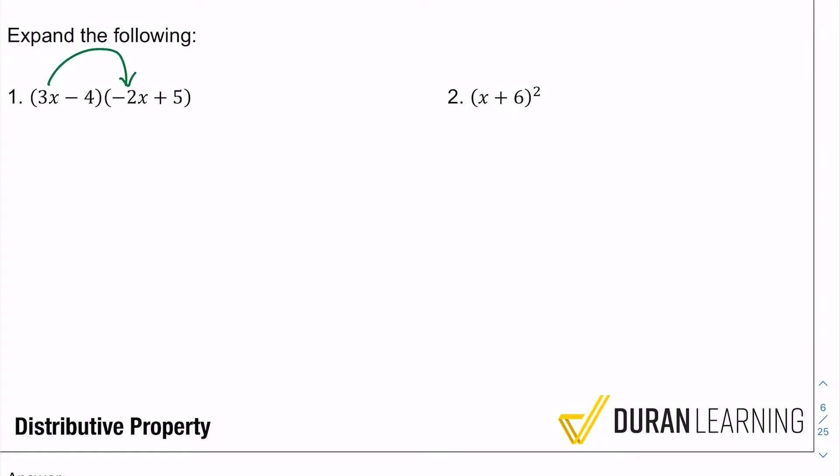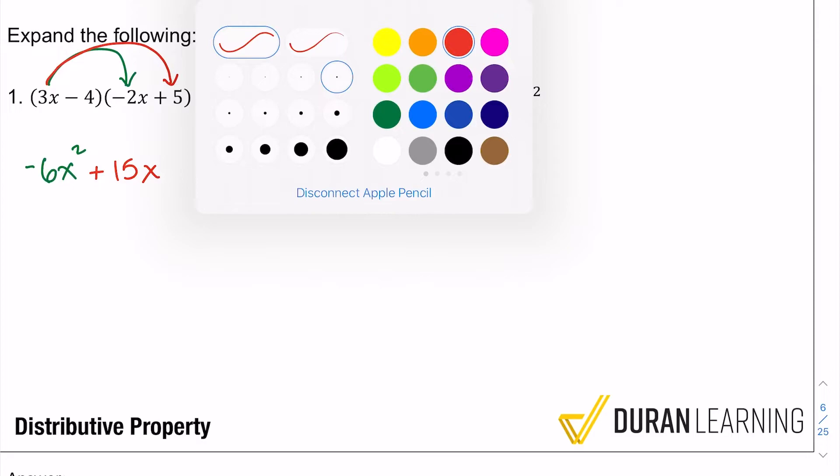So 3x times -2x: 3 times -2 is -6, and x times x, or anything times itself, is that thing squared. Right? Like 5 times 5 is 5 squared, 10 times 10 is 10 squared, x times x is x squared. So up next, again like I said, that 3x needs to multiply with both of those terms. So now we have 3x times 5, and that's going to be 3 times 5 is 15, and then x.